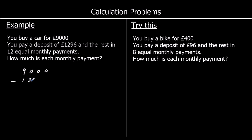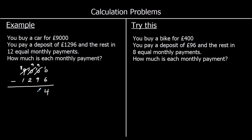So we'll do £9,000 take away £1,296 first. We can't do zero take away six, so we take one of the thousands — worth ten in the hundreds — then one of the hundreds, worth ten in the tens, then one of the tens, worth ten in the ones. Ten take away six is four; nine take away nine is zero; nine take away two is seven; eight take away one is seven. So we've got £7,704 left to pay.